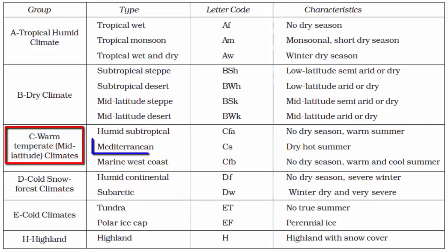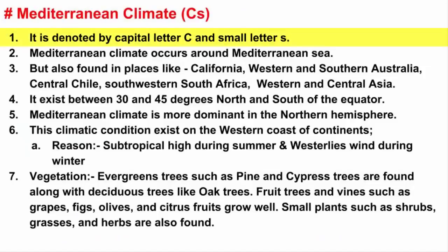In this video, we will learn about Mediterranean climate. It is denoted by capital letter C and small letter S. The capital letter C denotes the entire group, which is warm temperate mid-latitude climate, and small letter S denotes summer dry season.